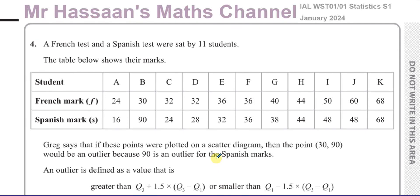Welcome back. This is Mr. Hassan's Maths Channel. I'm now answering question number four from the January 2024 Statistics S1 International A-Level EdExcel paper. This question is about correlation and regression. It says a French test and a Spanish test was sat by 11 students, and the table below shows their marks.